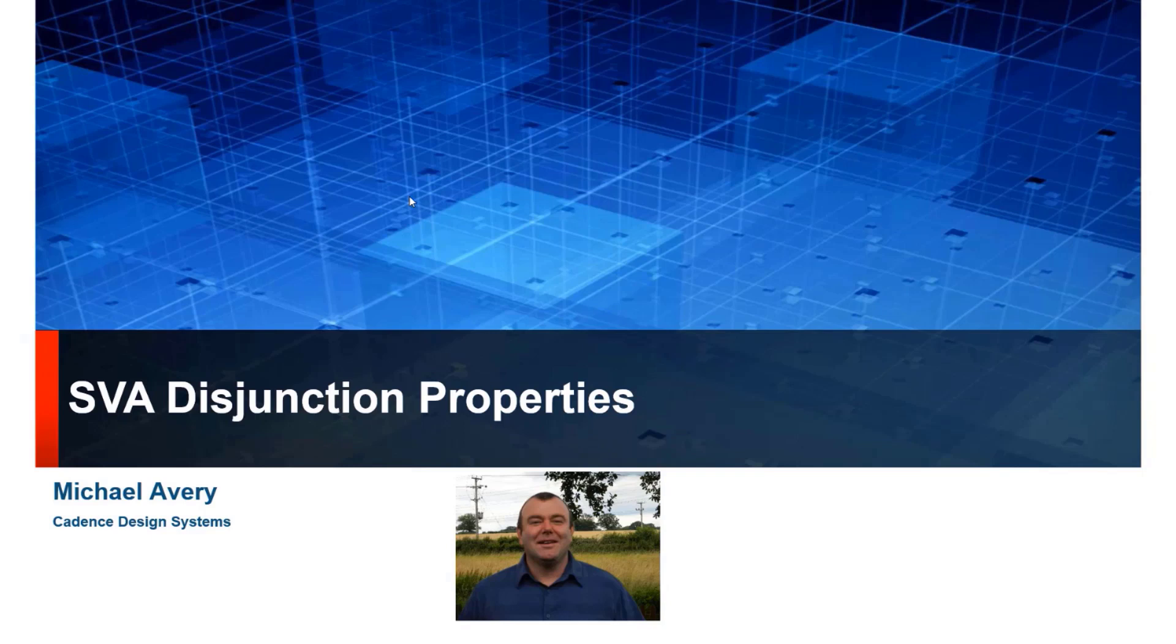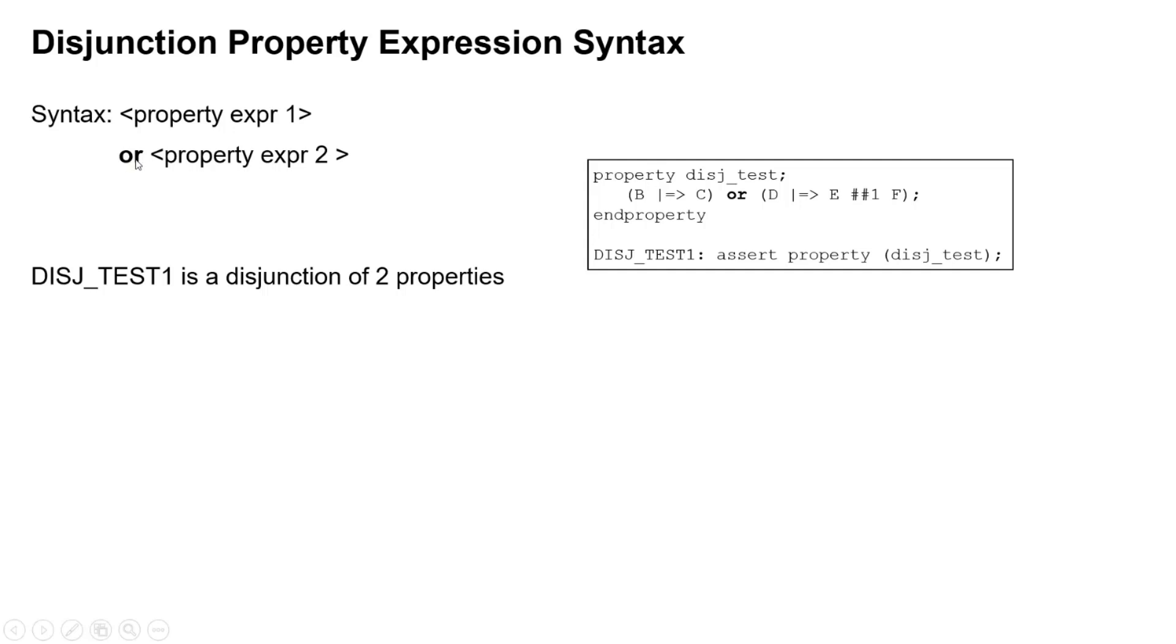Hello, my name is Michael Avery from Cadence Design Systems and I'm going to talk about SVA disjunction properties. A disjunction property is just an OR. So it's an OR of two property expressions and here shows an example.